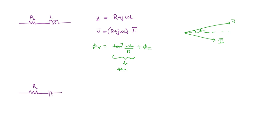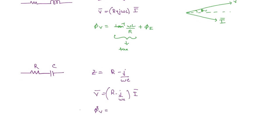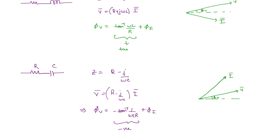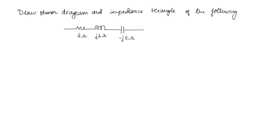For resistance in series with capacitance: Z = R − j/ωC, so V̄ = (R − j/ωC)·Ī, giving φ_v = −tan⁻¹(1/ωCR) + φ_i. This value is negative, so φ_i is greater than φ_v — the current phasor leads the voltage. For this reason, inductive loads are called lagging loads and capacitive loads are called leading loads, depending on whether current is lagging or leading the voltage phasor.